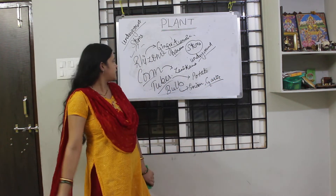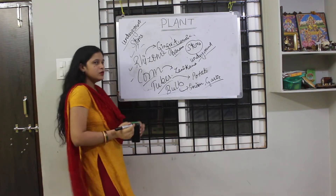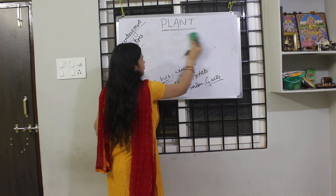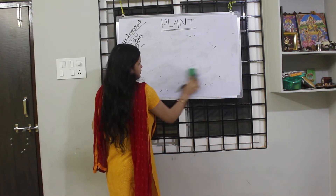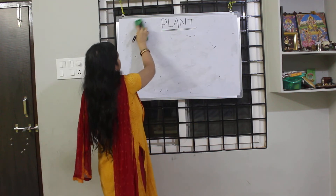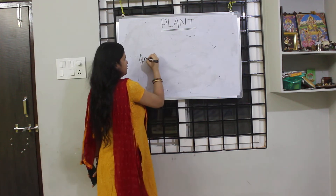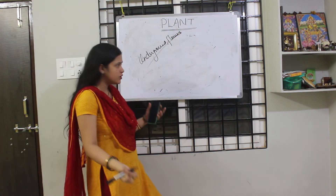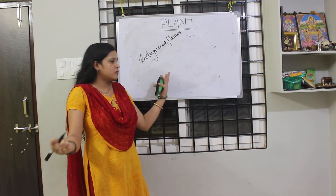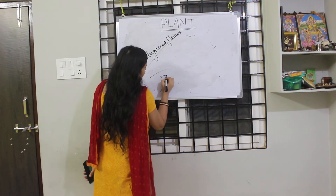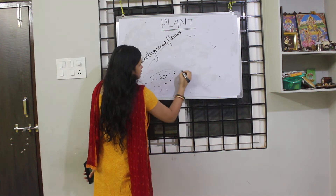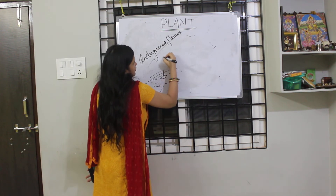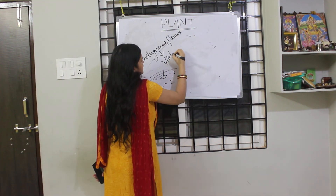Onion and garlic — these are underground stems. Do you know some plants have hidden flowers underground? These are underground flowers. Some plants have hidden flowers inside, below the ground. Can you give me some examples? One example is Viola.